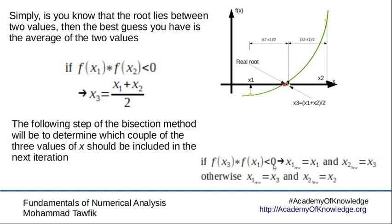Mathematically stating this, we say that if f(x3) times f(x1) is less than zero, then let the new x1 be the original x1 and x2 new is x3.